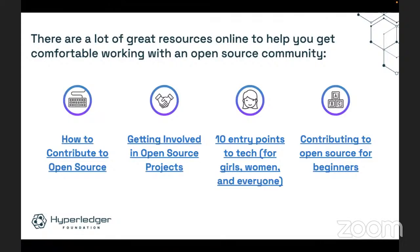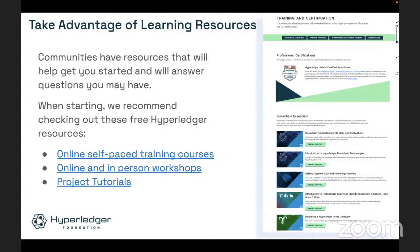There are a lot of great resources online about how to get involved with open source communities, and these are some of them. Hyperledger also has a lot of Hyperledger-specific information available. For example, we have online self-paced training courses, and we run online and in-person workshops throughout the year. All of our projects also have tutorials about how you can use, understand, and contribute to the projects. All this information is publicly available — you can go to hyperledger.org to find the links.